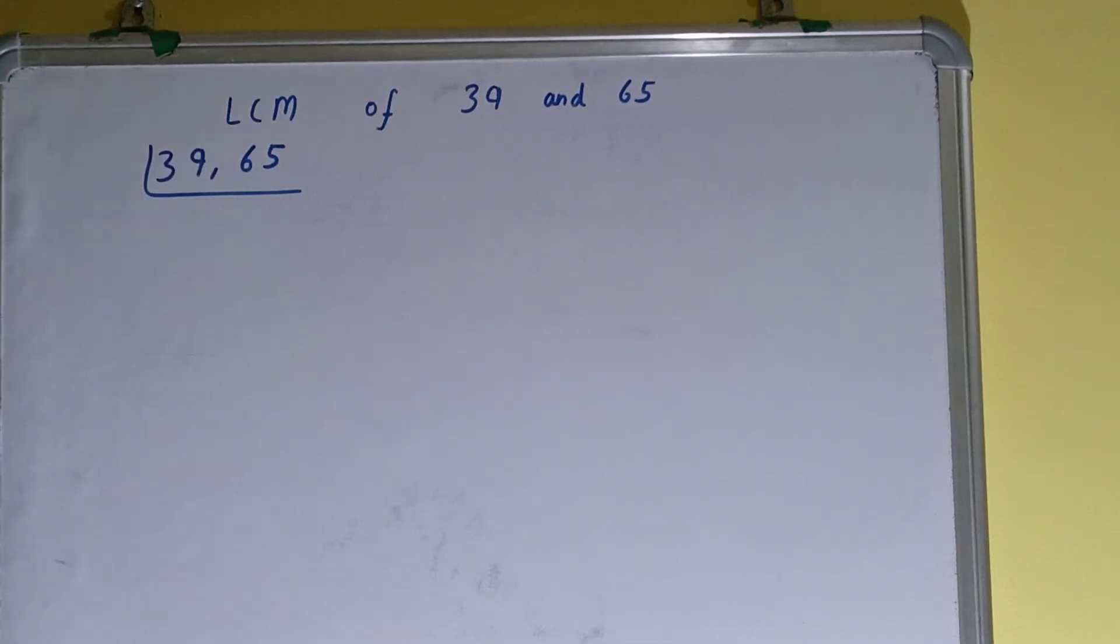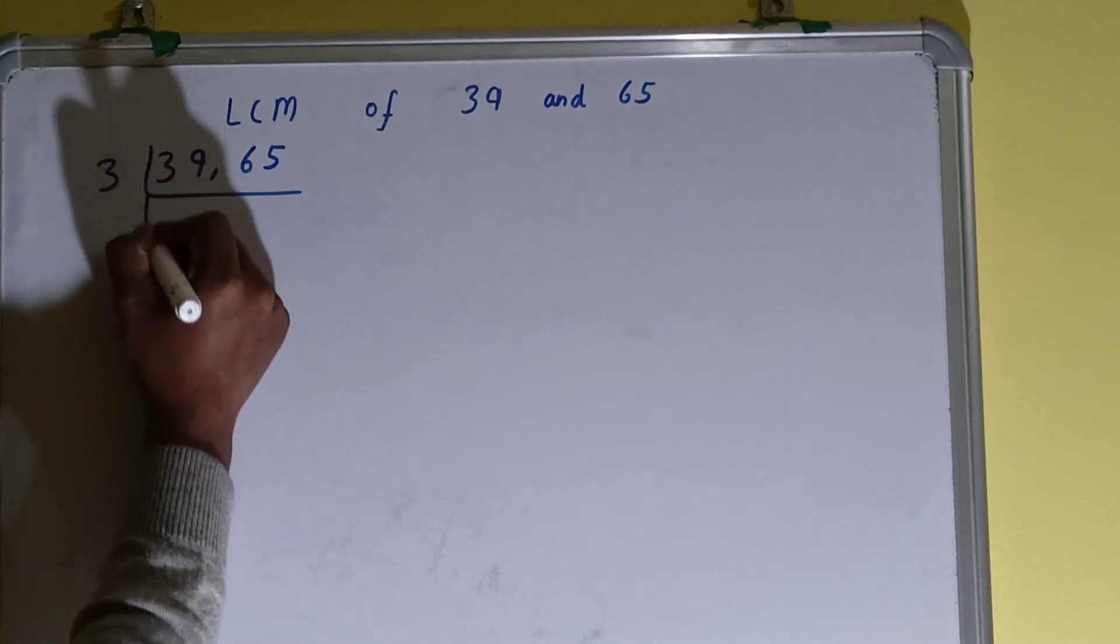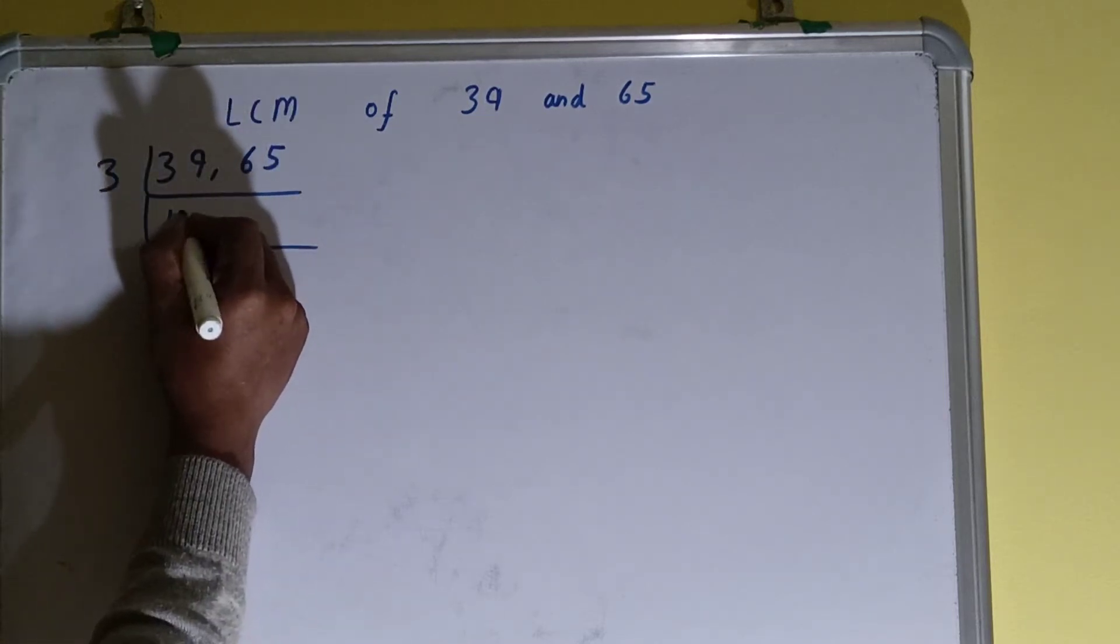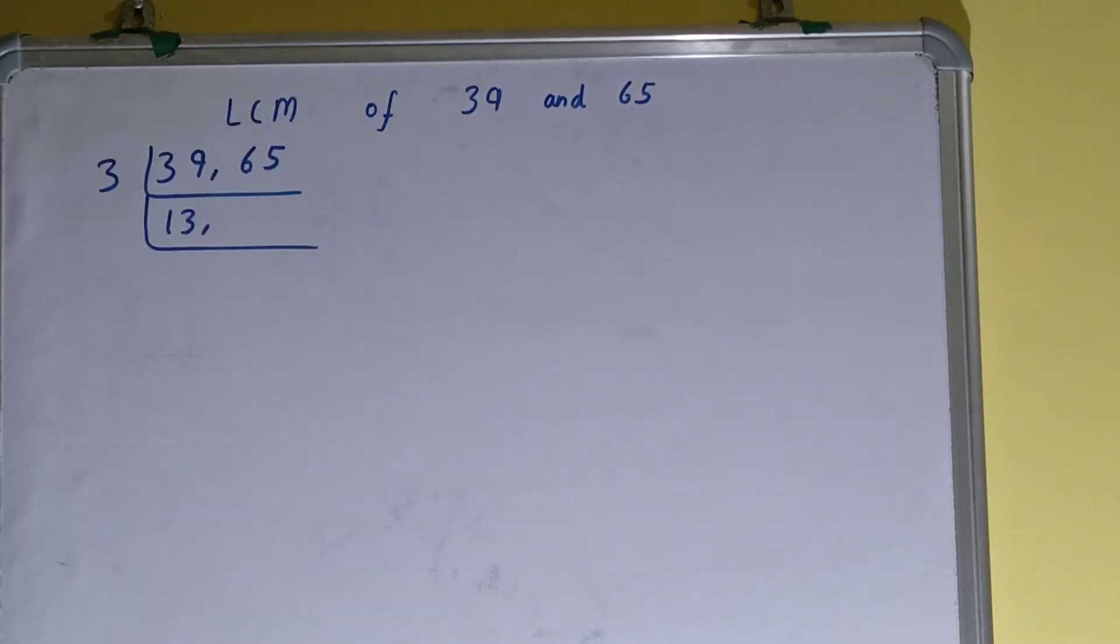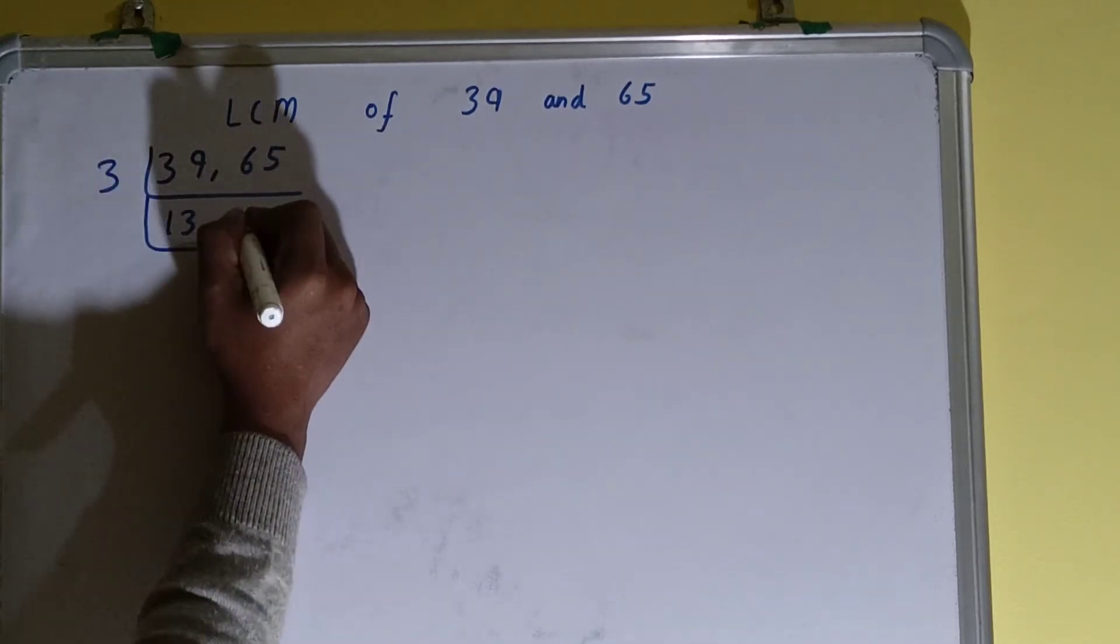So we'll go to the next lowest prime number, that is 3. If we check, this number is divisible by 3 but not the second one. So we'll divide only the first number, and it will become 13 on dividing. But the second number, 65, is not divisible by 3, so we'll just copy this down.